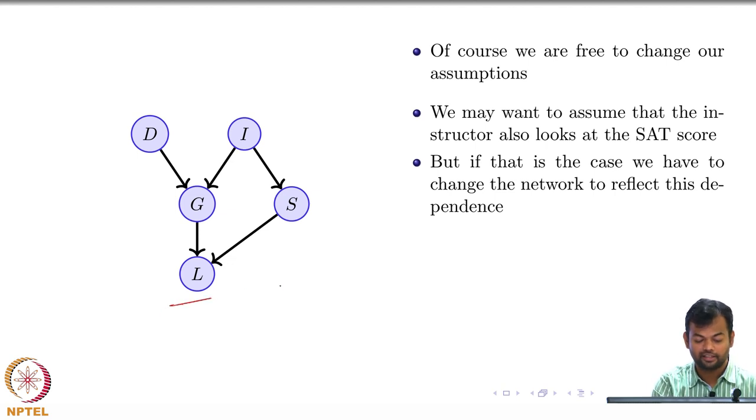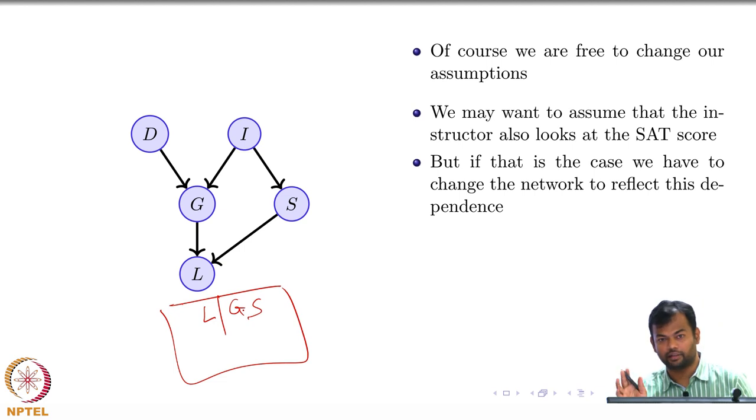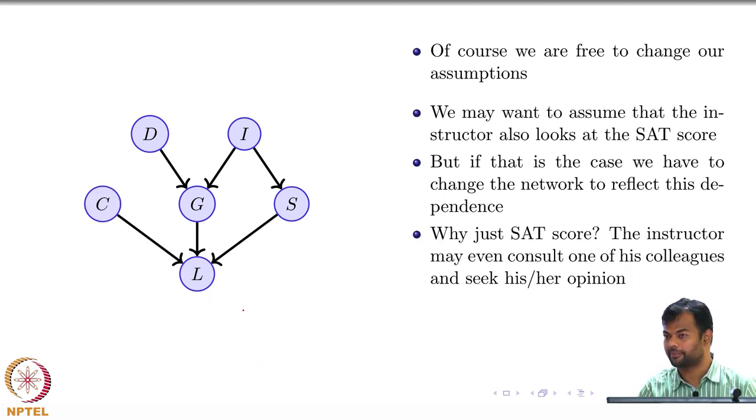We want to assume that the instructor also looks at the SAT score, then just add this edge. Tell me that this is the model that you have. This will in turn tell me what are the kinds of conditional distributions that I want to learn. Now here this table would actually be L given G comma S, which is fine as long as you tell me this is what you want.